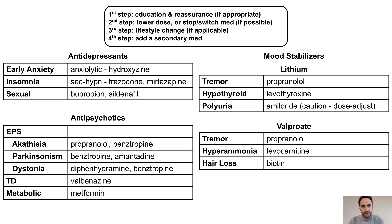Finally, for valproate, tremors can be treated with propranolol, hyperammonemia with levocarnitine, and hair loss may improve with biotin supplementation.